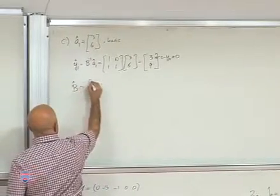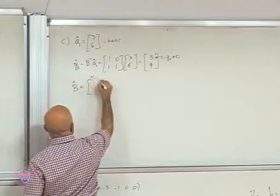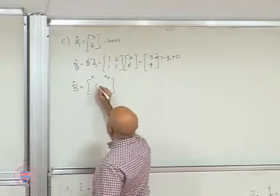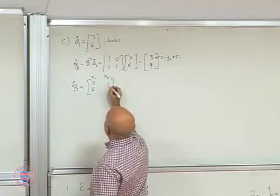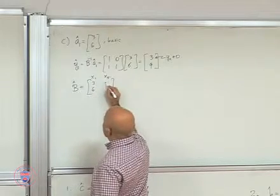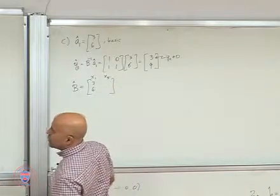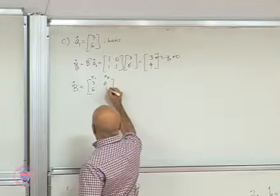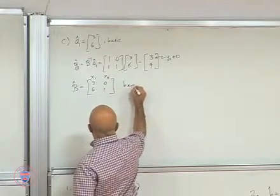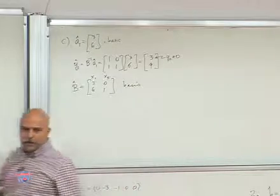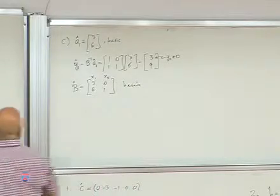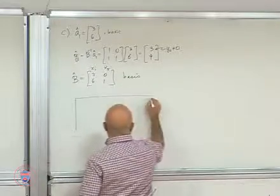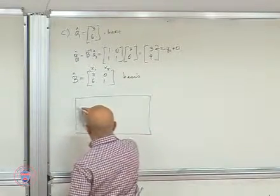B cap consisting of X1's column and X5's column: 3, 6 and 0, 1. X5 is 0, 1. This is a basis. We know that for sure. And so we enter that.